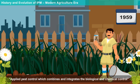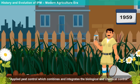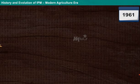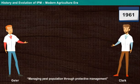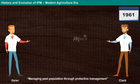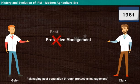Famous entomologists in the year 1959 defined integrated pest management as applied pest control, which combines and integrates the biological and chemical control. The idea of managing pest population was proposed by Geyer and Clark in 1961, who called their concept protective management, which later was shortened to pest management.